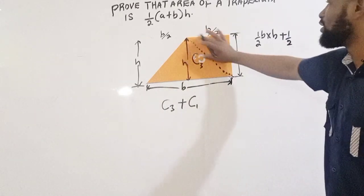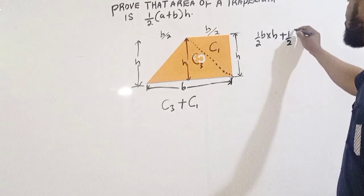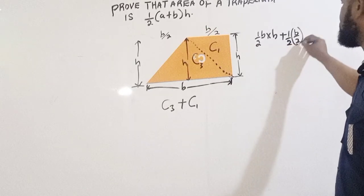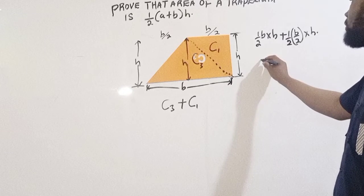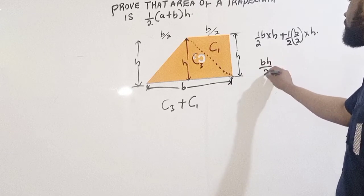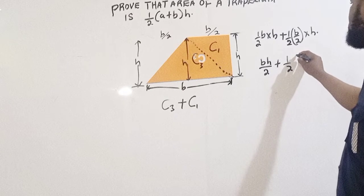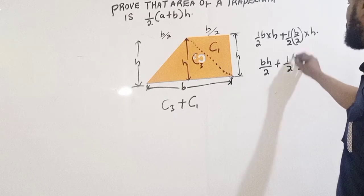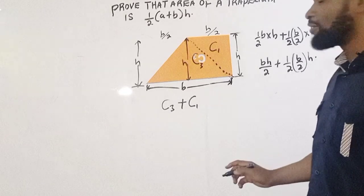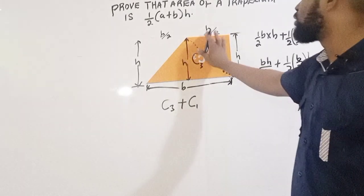Which is going to be base over 2 times height. So we have base height over 2 plus 1 over 2, base over 2, all of this. Now remember, for a trapezoid, the top of a trapezoid is always given as a.